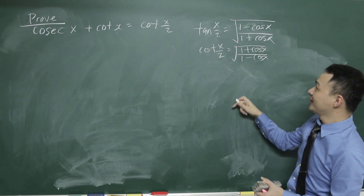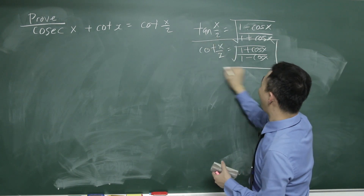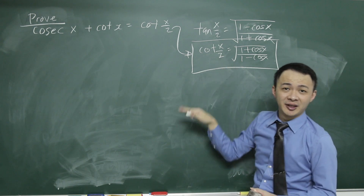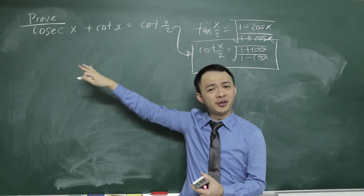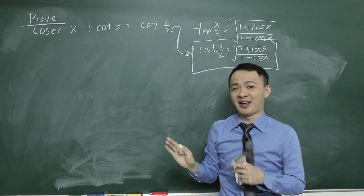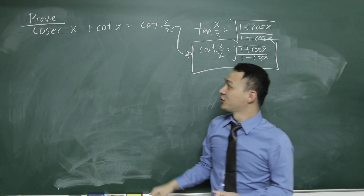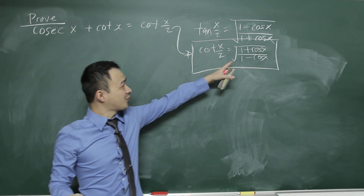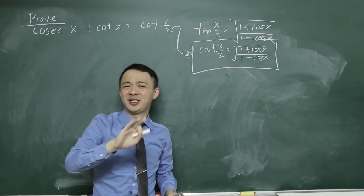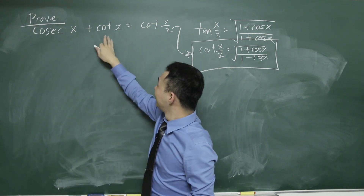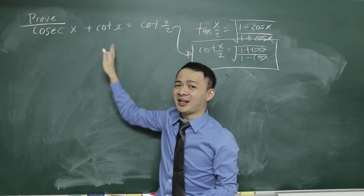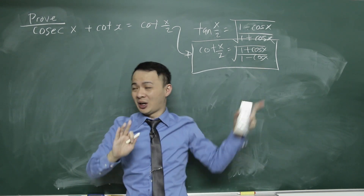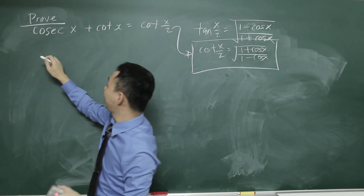So if you understand this, right now my objective for this question is to get this expression. If I can get this, that means I can prove the right hand side equals the left hand side. We'll start from here. Because of this formula, I know I will need sine and cosine. So cotangent over here — I'm not going to use 1 over tangent because I don't have any tangent — so I will change everything to sine and cosine.